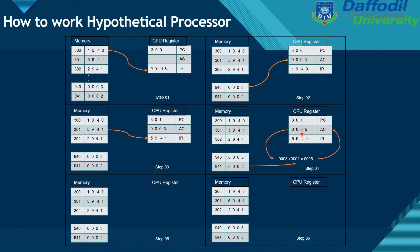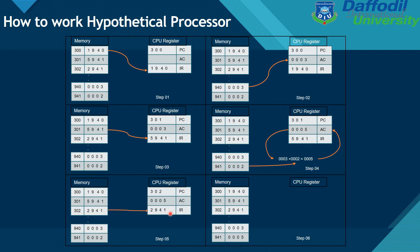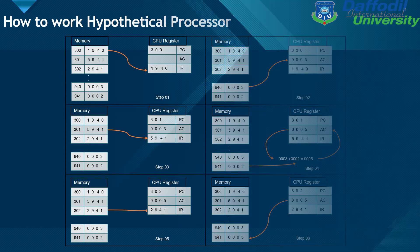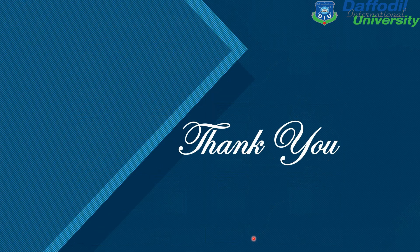Step five: the third memory address is 302 and the data is 2941. Step six: opcode 2 represents 'Store AC to memory', so the AC value 0005 is stored to memory address 941. This is how the hypothetical processor works. Thank you for watching my video.